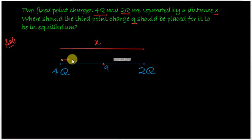...a from this charge 4Q, and therefore the distance would be x minus a from the other charge. So it's x here and this would be x minus a.